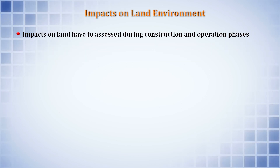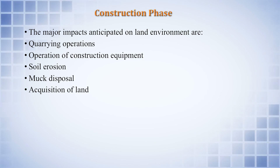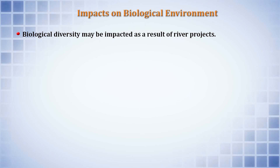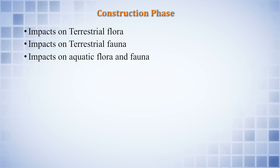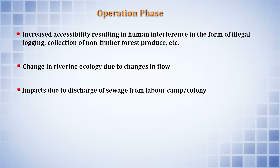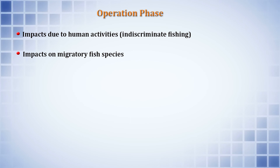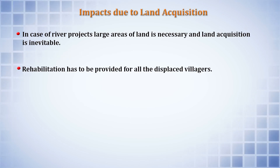Impacts on the land environment must be assessed during both construction and operation phases, covering quarrying operations, operation of construction equipment, soil erosion, muck disposal, and land acquisition. Biological diversity may also be impacted, with effects on terrestrial flora, terrestrial fauna, and both aquatic flora and fauna. During the operation phase, concerns include illegal logging, human interference in collection of non-timber forest products, changes in riverine ecology due to altered flow patterns, sewage discharge from labor camps, impacts on migratory fish species, and impacts due to land acquisition, for which rehabilitation must be provided to all displaced villagers.